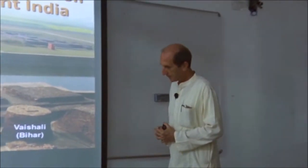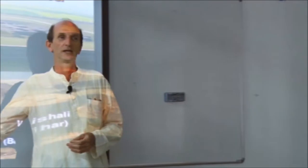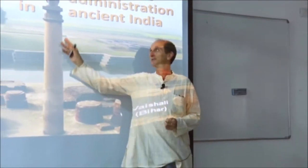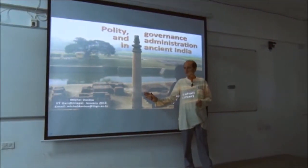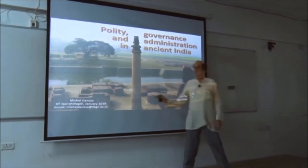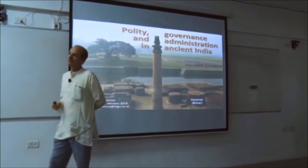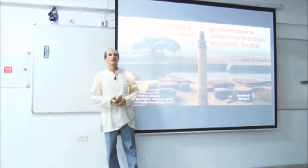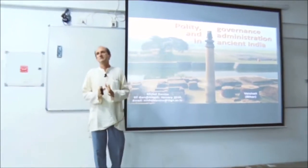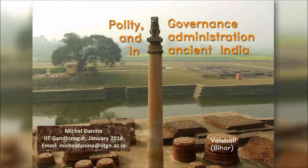Here you have a picture of Vaishali, which is in northern Bihar. Any student can tell me what this is. This is a pillar from Ashoka — Ashoka built a lot of pillars across India. It is an emblem of his authority, of the empire itself in fact. This is why I chose this photo to represent the notion of polity and governance.